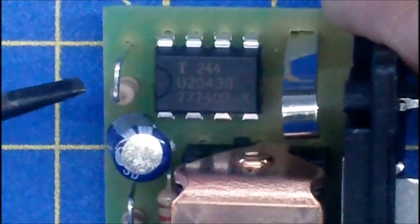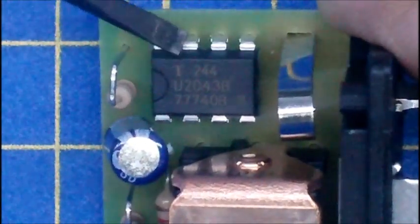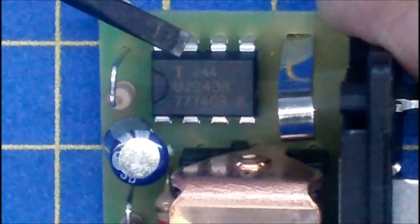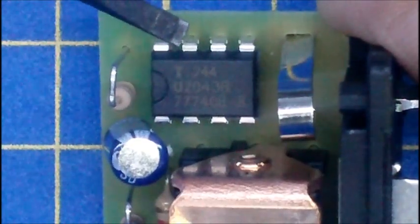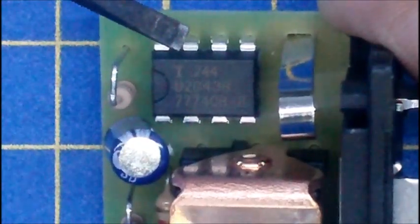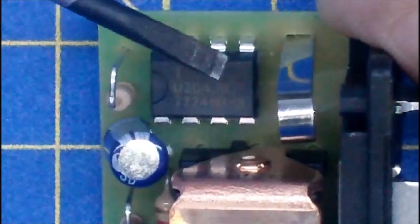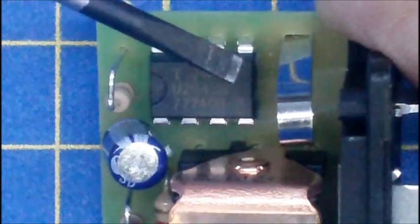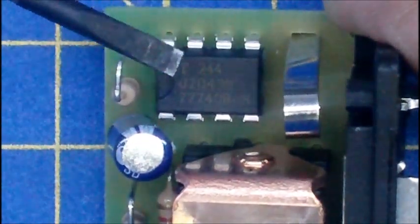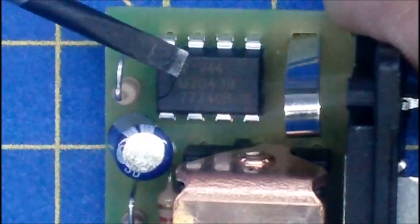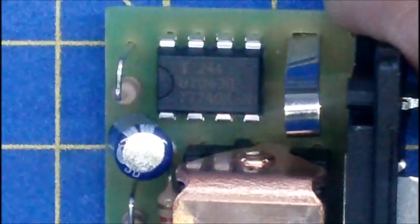Looking more closely at the chip here, we can see quite clearly the number on the chip. There are various different numbers: T244, U2043B, and 774088 something like that. You go off and Google those numbers, but the one that returns the hits is U2043B, and that brings you back a hit for various different data sheets on this chip.